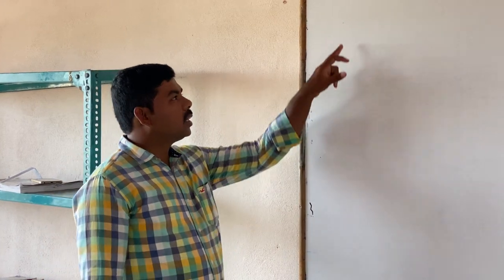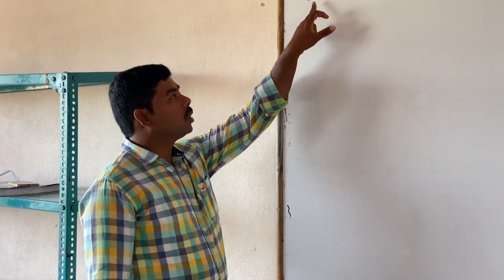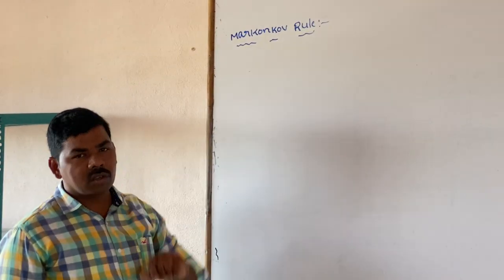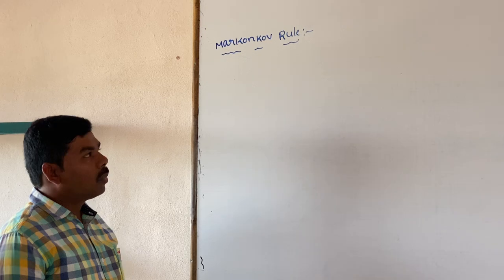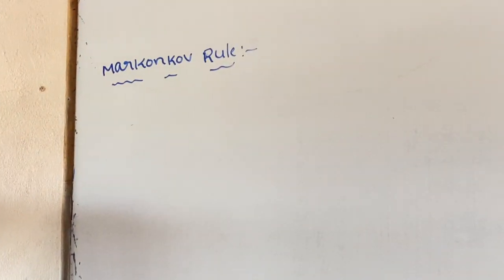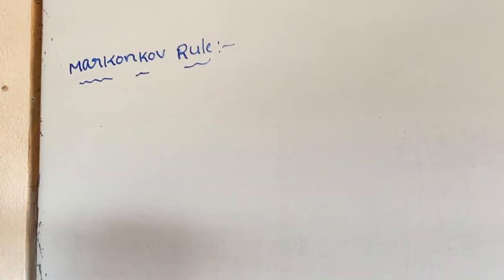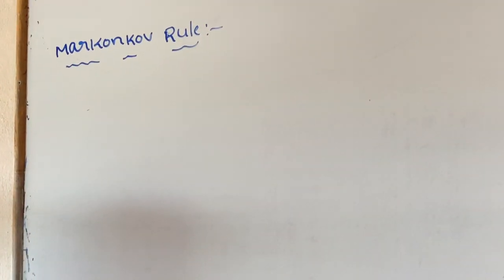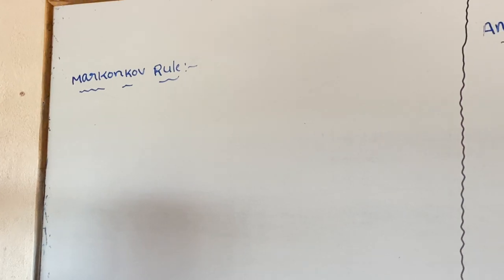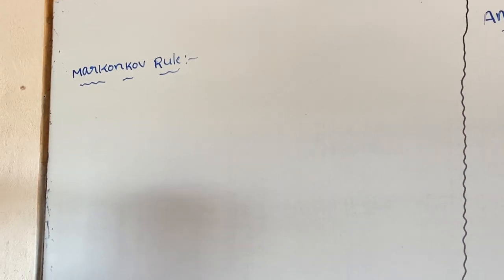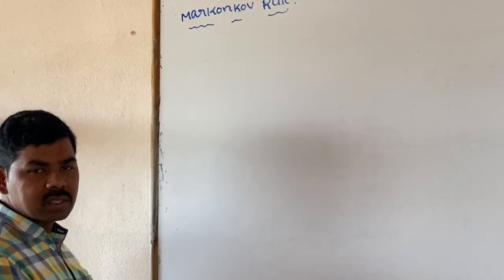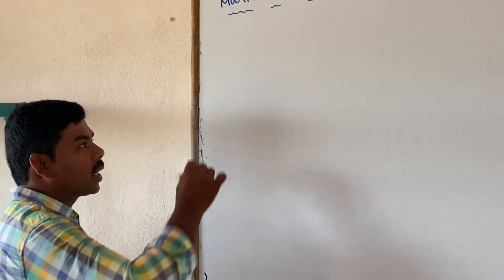Good morning all of you. We will discuss the topic Markovnikov's Rule and Anti-Markovnikov's Rule. Markovnikov's Rule: an unsymmetrical alkene is reacting with an unsymmetrical reagent. 2-bromopropane is the major product, and 1-bromopropane is the minor product.